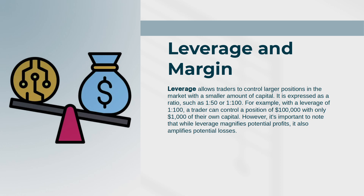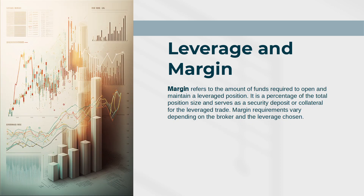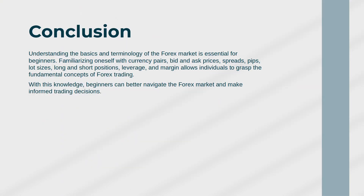Leverage and margin: leverage allows traders to control larger positions in the market with a smaller amount of capital. It is expressed as a ratio such as 50:1 or 100:1. For example, with a leverage of 100:1, a trader can control a position of $100,000 with only $1,000 of their own capital. However, it's important to note that while leverage magnifies potential profits, it also amplifies potential losses. Margin refers to the amount of funds required to open and maintain a leveraged position. It is a percentage of the total position size and serves as a security deposit or collateral for the leverage trade. Margin requirements vary depending on the broker and the leverage chosen.